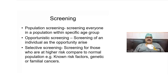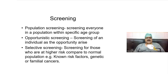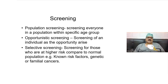Screening can be done on a population basis — called population screening — where everybody within a specific age, genetic, or gender group is screened. Opportunistic screening is when an opportunity arises and an individual is screened. Selective screening is when you screen people who are at high risk compared to the normal population, such as those with a genetic or family history of cancers or known risk factors. In India, we primarily employ opportunistic and selective screening, as there are no national population screening programs.